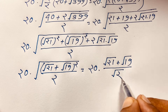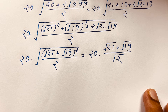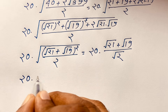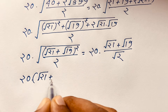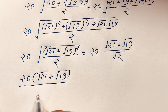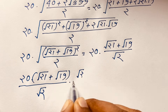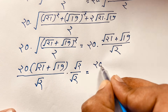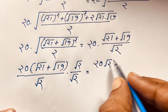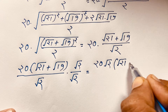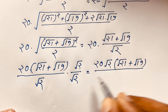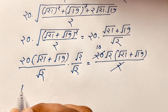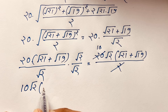So we get 20 times (square root of 21 plus square root of 19) over square root of 2. Then I multiply below and above by square root of 2 over square root of 2. The denominator becomes square root of 2 times square root of 2, which is 2. So 20 divided by 2 gives us 10.